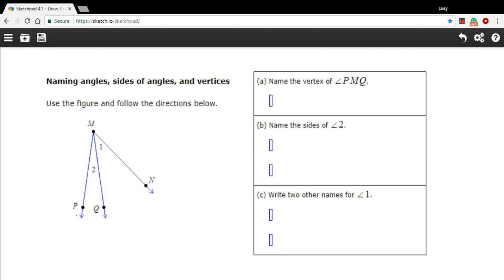So you can name these angles by their letters. It takes three letters to name an angle. You have the two points on the arms of the angle and you have the vertex. And the vertex always goes in the middle. So you could call this angle PMQ or you could call it QMP. It would be the same thing.